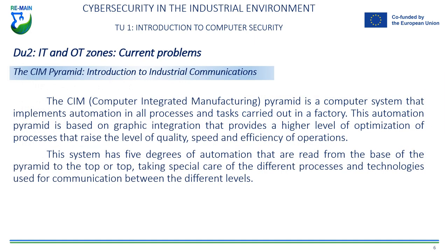The CIM — Computer Integrated Manufacturing — Pyramid is a computer system that implements automation in all processes and tasks carried out in a factory. This automation pyramid is based on a graphic integration that provides a higher level of optimization, raising the level of quality, speed and efficiency of operations. This system has 5 degrees of automation, read from the base of the pyramid to the peak, taking special care of the different processes and technologies used for communication between the different levels.